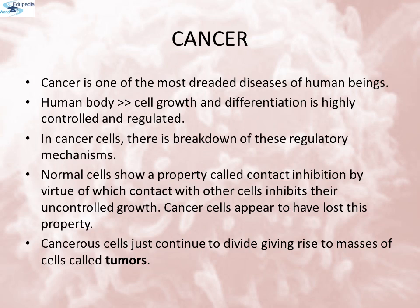Cancer is one of the most dreaded diseases of human beings and is a major cause of death all over the globe. More than a million Indians suffer from cancer and a large number of them die from it annually. The mechanisms that underlie development of cancer, or oncogenic transformation of cells, its treatment and control have been some of the most intense areas of research in biology and medicine. In our body, cell growth and differentiation is highly controlled and regulated.